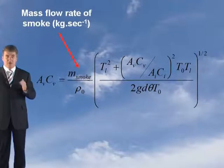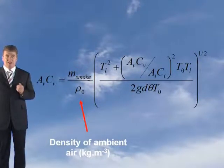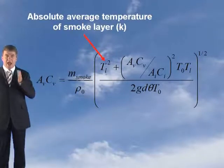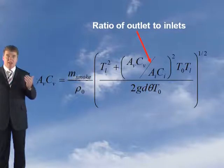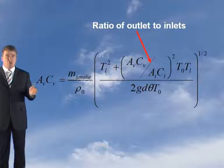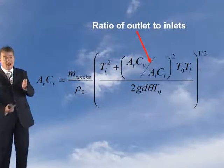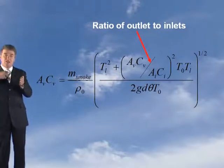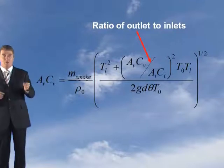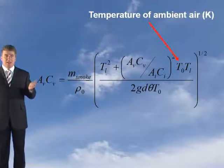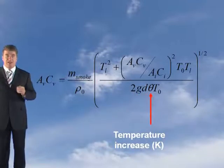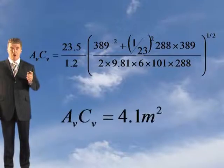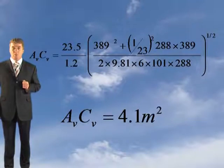The formula to work out AV·CV has M as your mass flow rate, rho-zero as the density of ambient air (normally taken as 1.2), TL as your absolute temperature of the smoke layer, and AV·CV divided by ACI as your ratio of inlets to outlets. Because we've got 6 reservoirs, with a fire in one you've got one outlet and five potential inlets, so that ratio is 1 divided by 5. With TO at 288, gravity at 9.81, the depth of the smoke layer, and theta, you should get 4.1 square metres per reservoir.